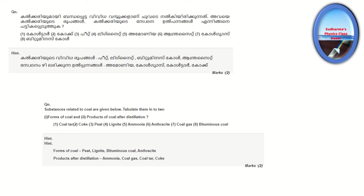Substances related to coal are given below. Tabulate them into two categories: forms of coal and products of coal after distillation.